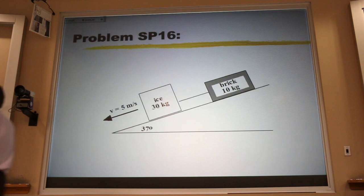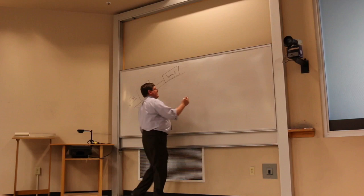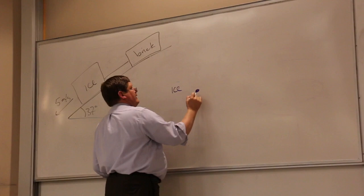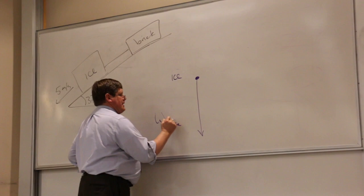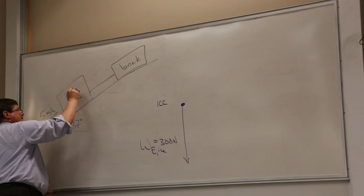Let's look at this problem. The first part asks us to find the tension in the string. When we're looking for a force, we draw a free body diagram. The simplest free body diagram is for the ice. I have a gravitational force — that's 300 newtons because this is 30 kilograms.